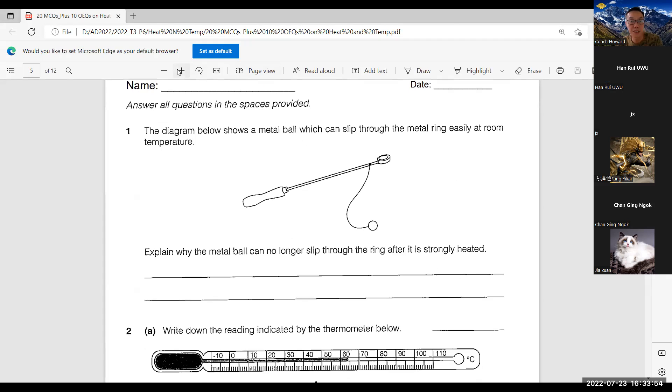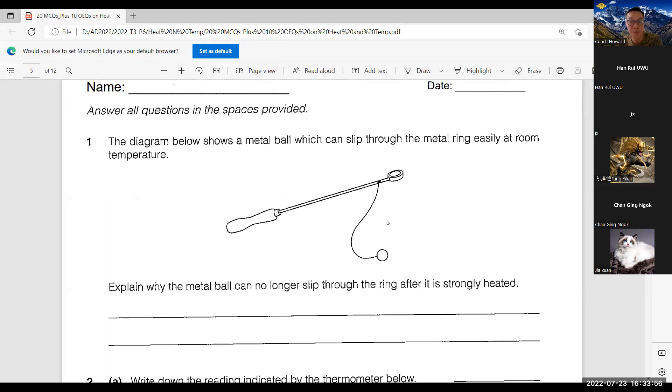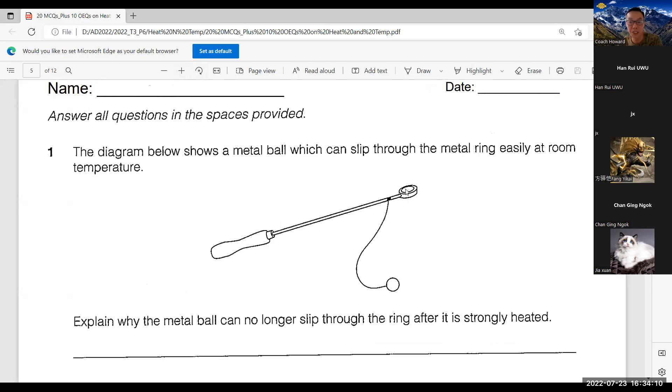As you can see, this is a very common apparatus in the science lab. There's a metal ball here and this is the ring. At normal room temperature, the metal ball can go through the ring just neatly. It can slip through. If you heat it, it will gain heat and expand.